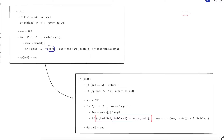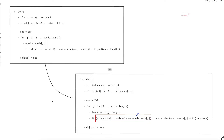Concretely: precompute the hash of all given words offline and store them in a words_hash array. For the comparison, compute the hash of the substring of target starting at index 'ind' with the same length as the current word. We can compute substring hashes efficiently using a prefix hash array — this is essentially prefix sum applied to hash values.